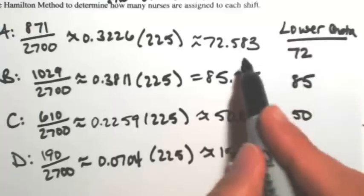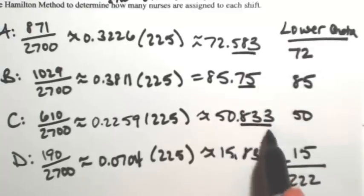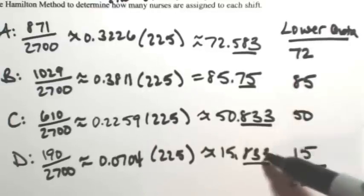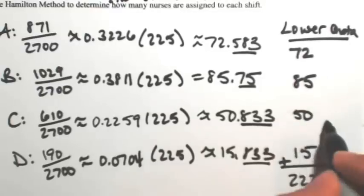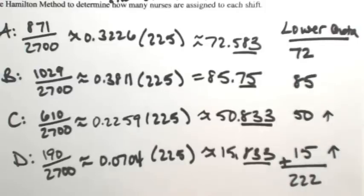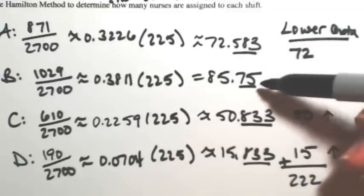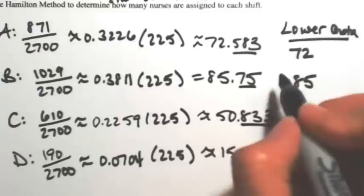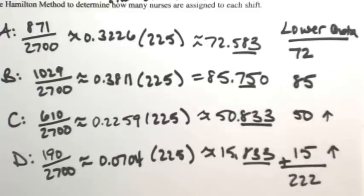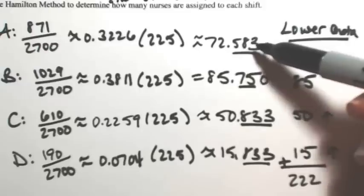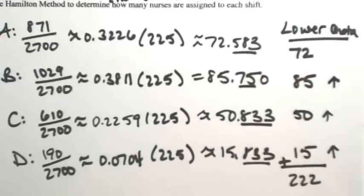So looking at just the fractional part of each one, the highest ones are a tie, but we have three nurses to give out anyway. So both C and D are going to go up by one. So there's two of them, I need to assign one more. So of the 0.583 and the 0.75, if you want you can think of 0.75 as 0.750 if that helps you. So 0.750 is more than 0.583, so shift B is going to go up.